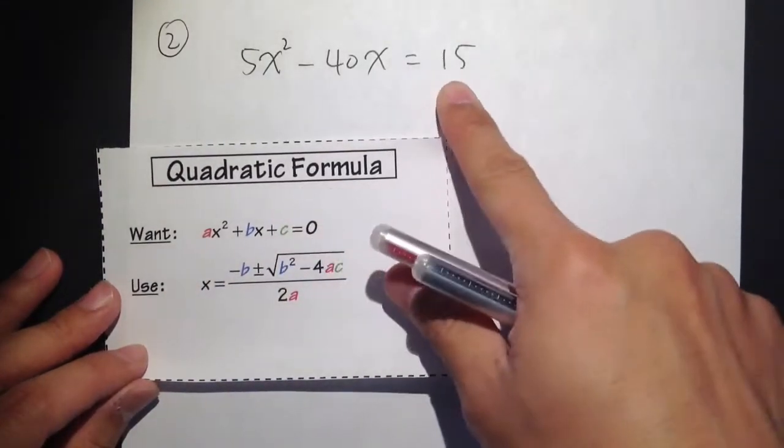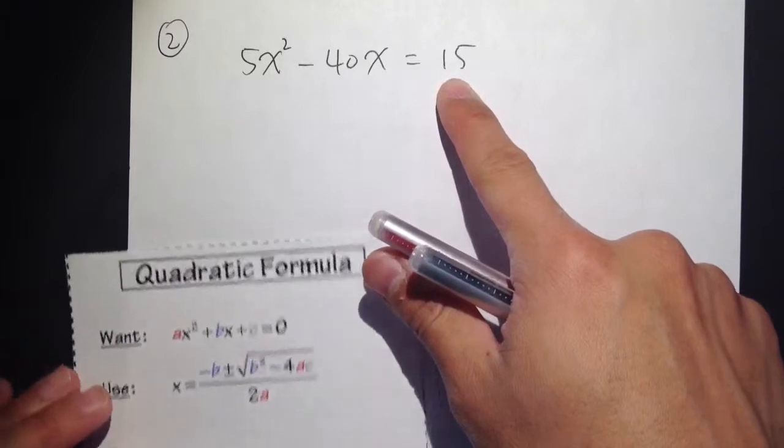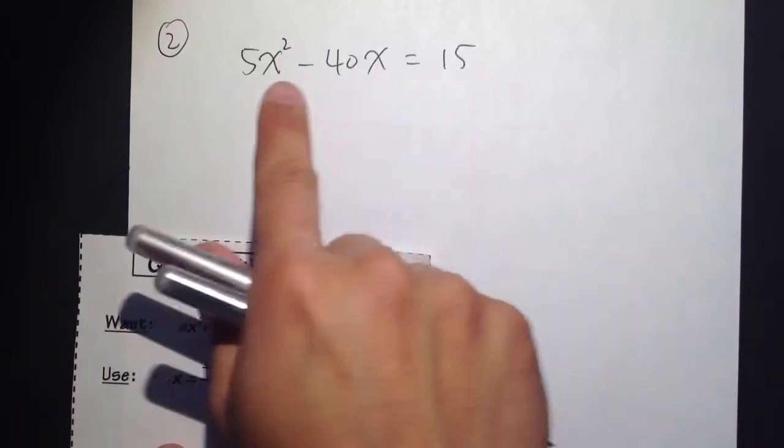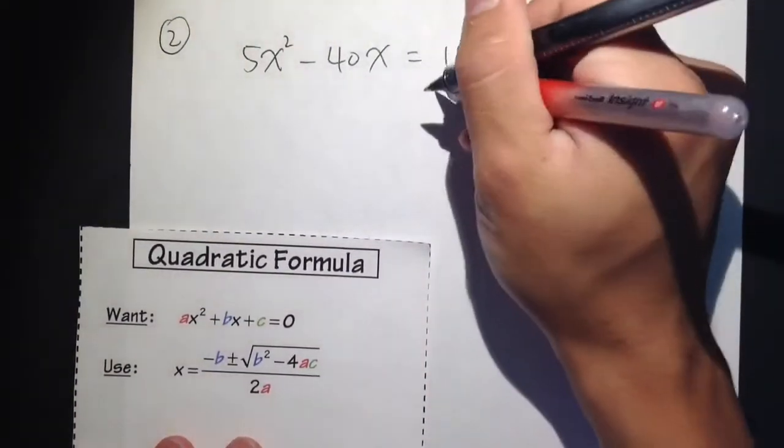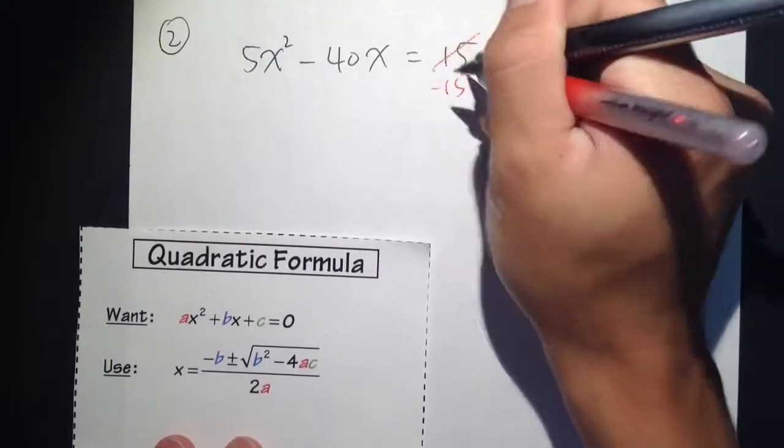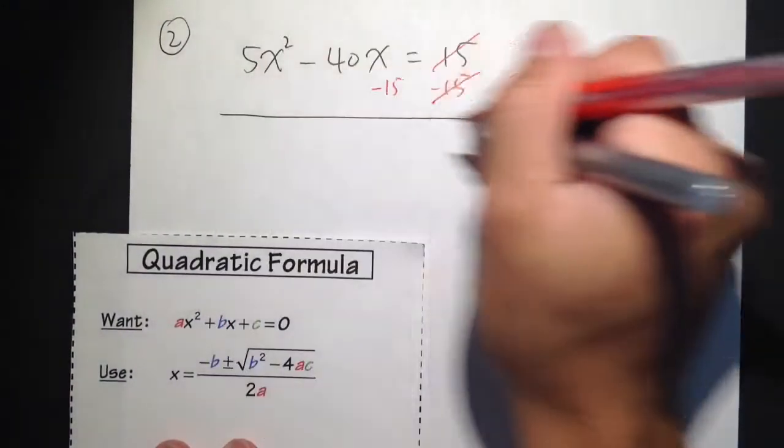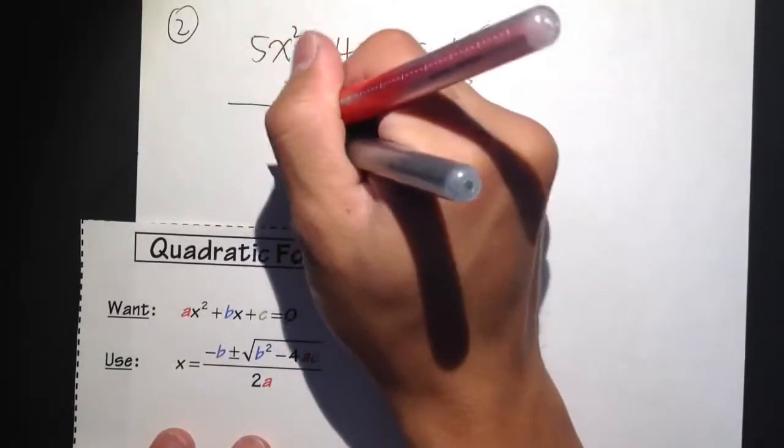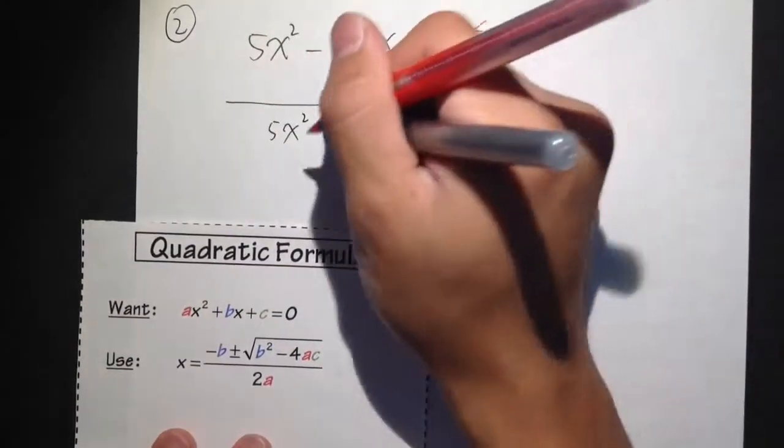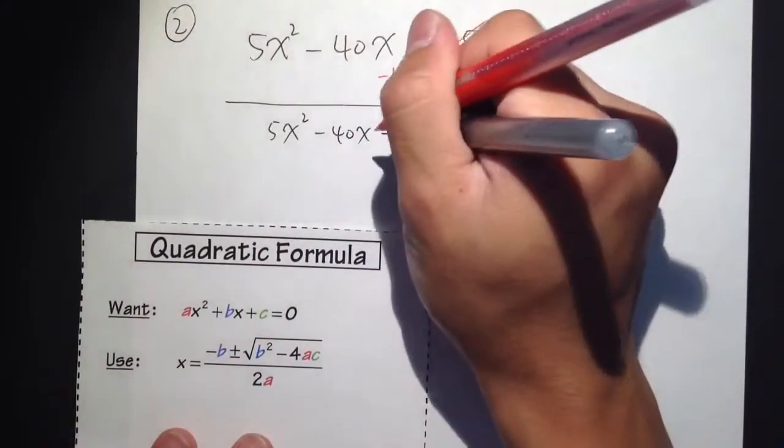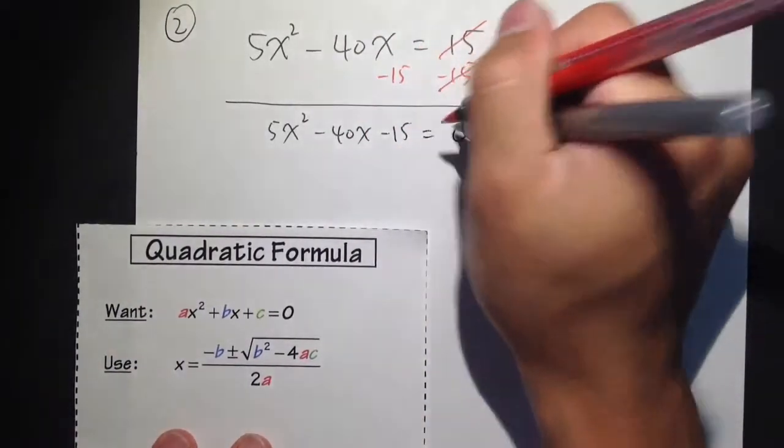So this 15 is not going to be the c. We will actually need to subtract 15 on both sides to bring this to the left-hand side first. So let's do that. Minus 15 here, cancel this out, and I'll also put minus 15 on the left-hand side.